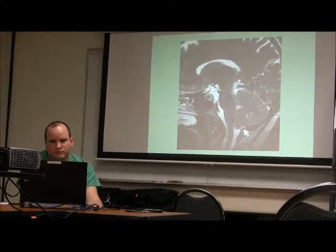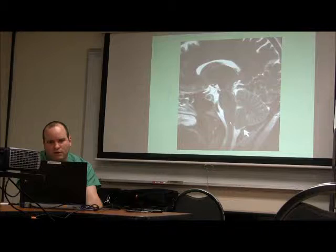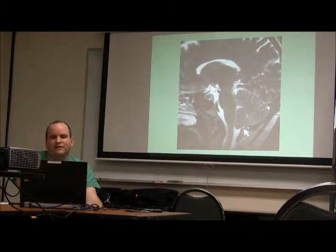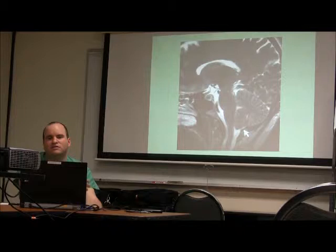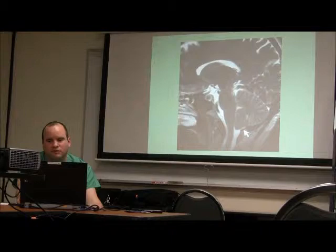This is the foramen magnum. This is the brain stem right here. This is the medulla and this is the spinal cord down here. The tonsils are supposed to be up here, but here they're kind of pushed below. This would be the foramen magnum. In some people it's normal. People who have a Chiari malformation, their tonsils can be low. It doesn't mean there's a problem or they can die, but this is just a picture showing you a tonsil formation.